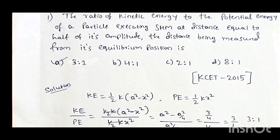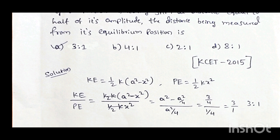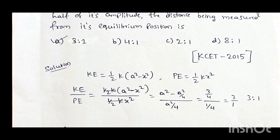Here we have the energies: kinetic energy expression is (1/2)K(A² - X²), and potential energy is (1/2)KX². Taking the ratio of kinetic energy to potential energy gives (1/2)K(A² - X²) divided by (1/2)KX². The (1/2)K cancels, leaving (A² - X²) / X². X is the displacement.